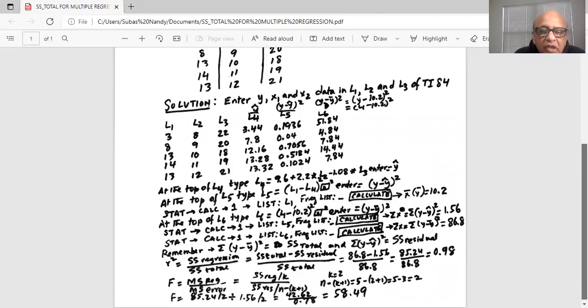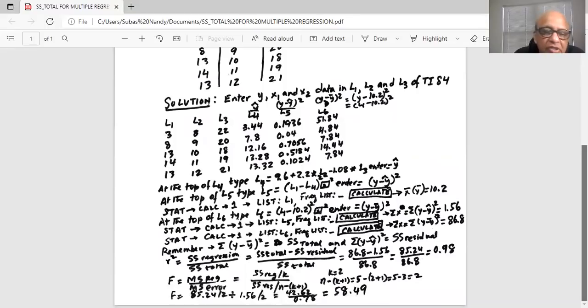Also we know by definition R square is sum square regression by sum square total. What is sum square regression? It's sum square total minus sum square residual. Now our sum square total is 86.8 minus sum square residual 1.56. So the numerator is 85.24 divided by 86.8. R square is 0.98.